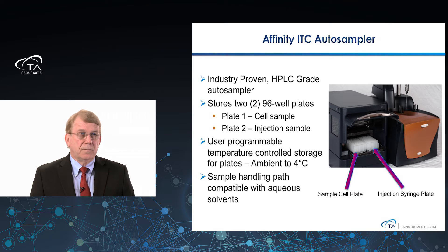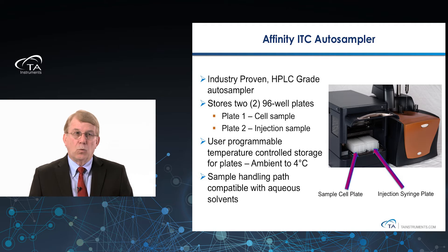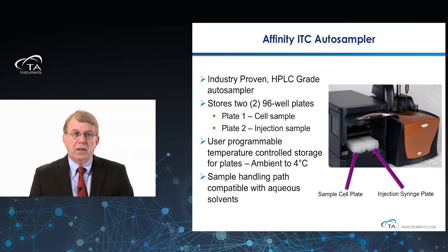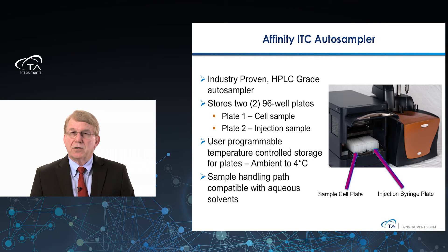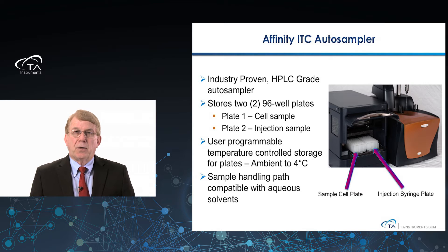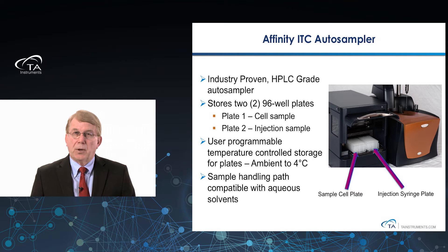The autosampler used is an industry-proven HPLC-grade autosampler. It has two 96-well plates — one for the cell sample and one for the injection sample. It is user programmable. The temperature-controlled storage area allows you to set the temperature from ambient down to four degrees for precious proteins that may be unstable at room temperature. The sample path is completely compatible with aqueous solvents as all ITC instruments are.